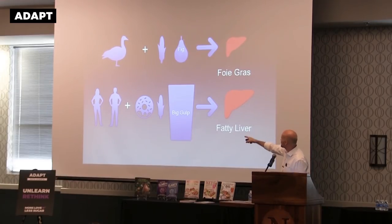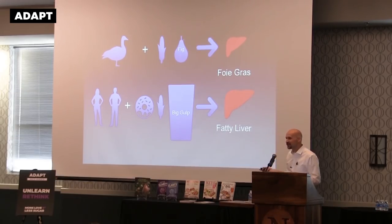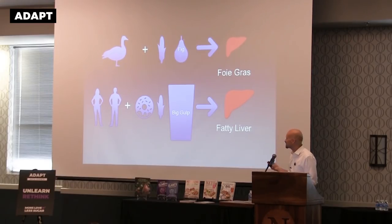We can do it in humans too, and we do it all the time. We take humans, add a donut, some corn, or a Big Gulp — which is high fructose corn syrup — and we get fatty liver. It's a disaster, and it's a huge epidemic that's growing rapidly.